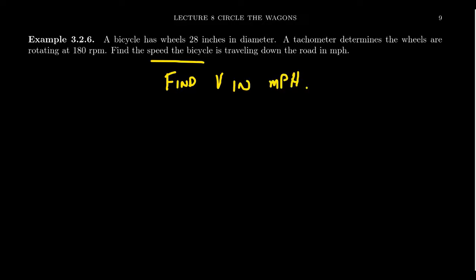So in order to do that, we're going to utilize the formula that V equals R times ω. So we can compute the linear speed if we know the radius and we know the angular velocity. Now, we do know about the radius, right?